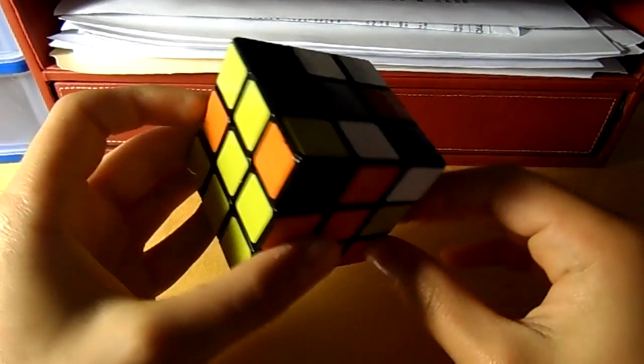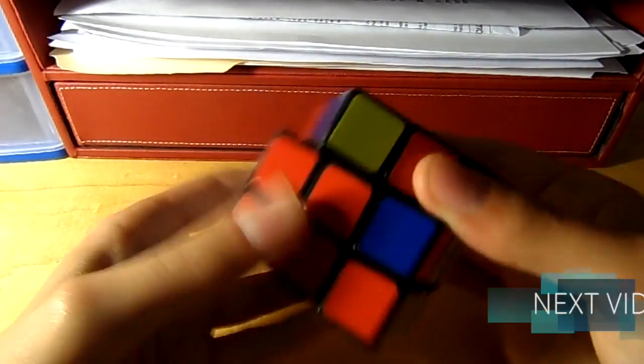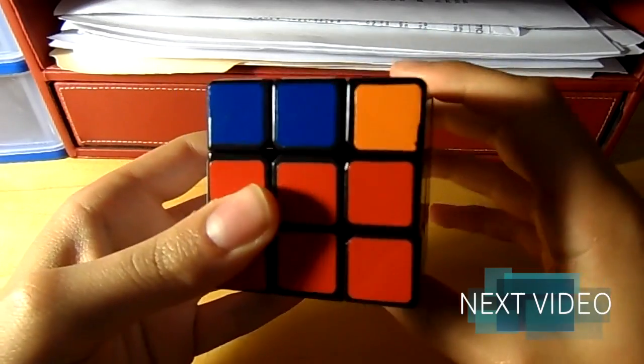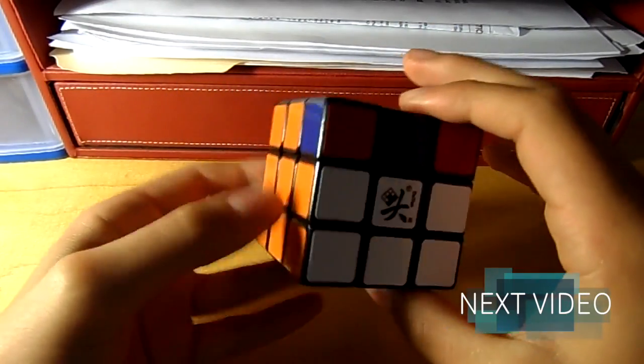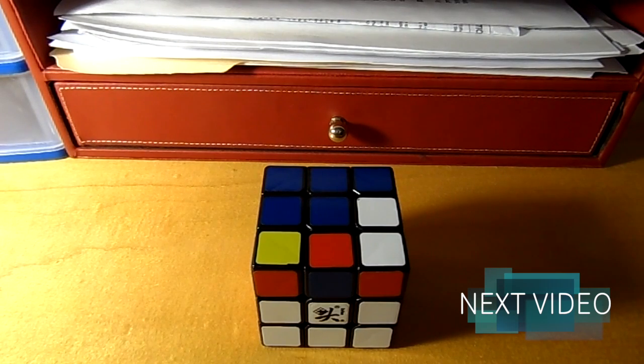So with those two algorithms in mind, you can go ahead and solve for the remaining two middle layer edges. And the middle layer is now complete. You may now move on to the final tutorial, which will teach you how to solve the top layer.